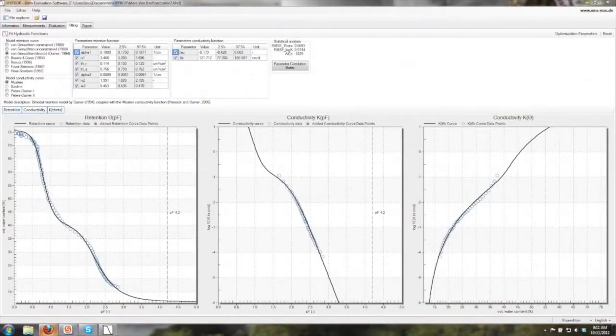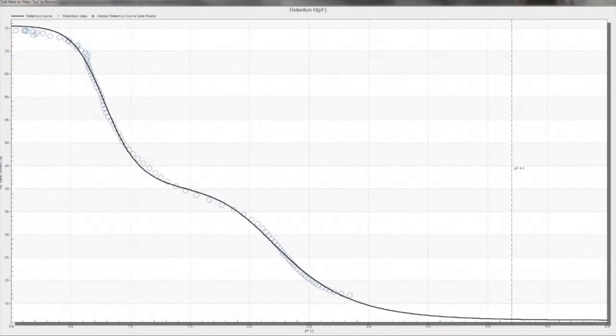Look at some of the data we got earlier this year. This is a poorly graded soilless substrate used in greenhouses. The HYPROP gave me over 100 data points. These data are much more interesting than you could predict if you were limited to five points.